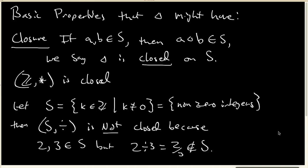So that's the first property a particular operation might have: closure. A second basic property that a binary operation might have is associativity. Associativity is when you can put parentheses wherever you want.